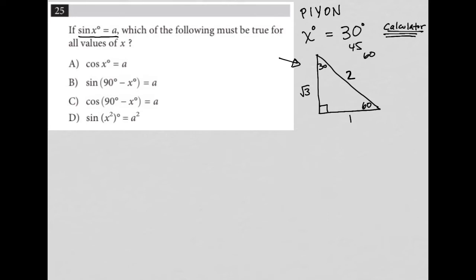So when x is 30, what is the sine of 30? Well, the sine of an angle is representative of the opposite over the hypotenuse, right? Because we come from SOHCAHTOA. So the sine of 30 is the opposite side, which is 1, over the hypotenuse, which is 2. So the sine of 30 is 1 half.